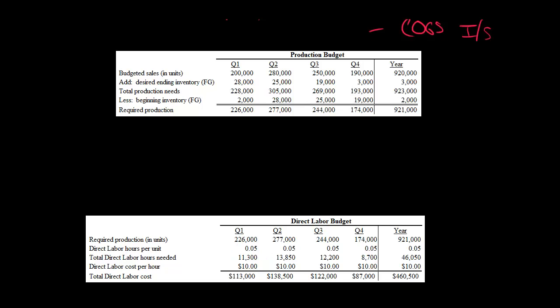If 0.05 hours is hard to think about, you can multiply that by 60 minutes, and that would be three minutes. So that's basically saying that to make one bottle of orange juice, we spend three minutes of direct labor. So 226,000 bottles times 0.05 direct labor hours per unit tells us that in quarter one we're going to need 11,300 direct labor hours.